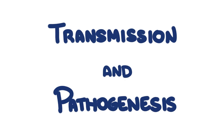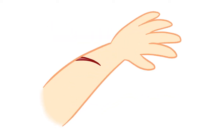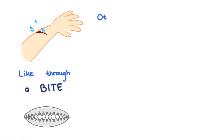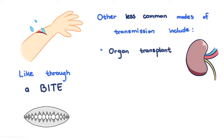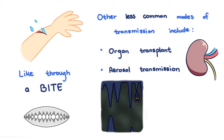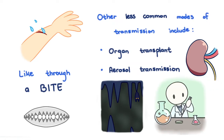One can get the virus when virus-laden saliva enters a break in the skin, like through a bite. Other less common modes of transmission include organ transplant from a previously undiagnosed donor resulting in rabies infection in the recipient, or aerosol transmission, which can occur when there are lots of suspended air droplets containing the virus — such as in humid caves with a large bat population, or laboratories with subpar containment. But for the average person, you only have to worry about bites.